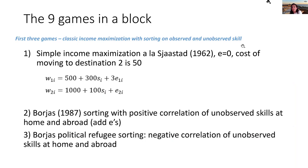A question from the audience asked which specific theories are being tested with this setup. The answer: nine games are structured so each introduces a different real-world aspect, allowing us to observe its impact on decisions step by step — exactly what we are doing.